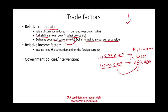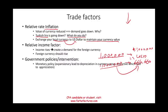The relative income factor: if income rises in a certain country, that creates a demand for foreign currency because people have greater purchasing power. Their income rises, so they buy more foreign goods and services, which increases demand for the foreign currency, causing it to rise.